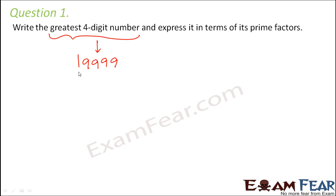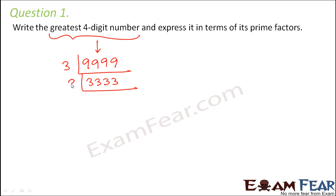How would you find its prime factors? Perform prime factorization. Will it be divisible by 2? No. Will it be divisible by 3? Yes — dividing gives 3333. This will again be divisible by 3, giving 1111.